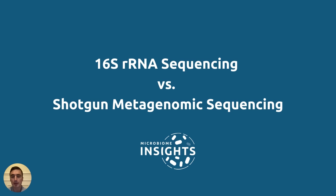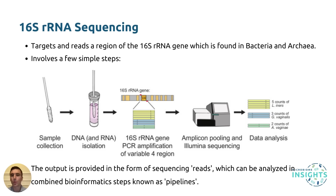Whether it is human, animal, or environmental microbiomes that you are interested in, it's important to understand and consider the pros and cons of the traditional sequencing methods — 16S rRNA versus newly developed shotgun metagenomic sequencing. So firstly, what is 16S sequencing? A form of amplicon sequencing, 16S rRNA gene sequencing targets and reads a region of the 16S rRNA gene, which is found in all bacteria and archaea, meaning this sequencing can only identify these types of microorganisms.